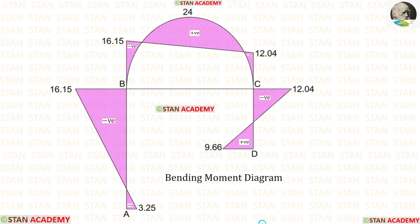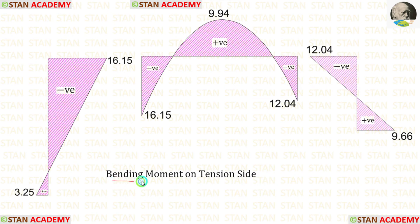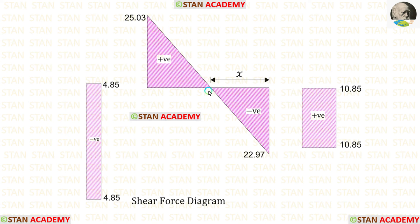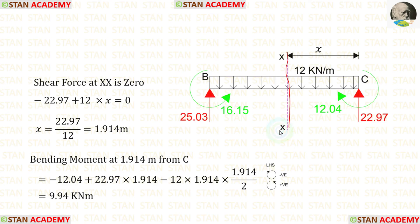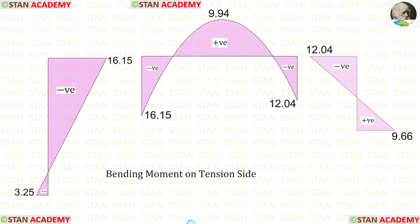Combining both diagrams gives the bending moment diagram. Alternatively, we can draw the bending moment diagram on the tension side. In beam BC, there is a maximum positive bending moment. To find the point where it occurs, we look at the shear force diagram — where the shear force becomes zero, there will be the maximum positive bending moment. Making a section at that point and using the condition that shear force equals zero, we can find x, and then use x to calculate the maximum positive bending moment. This concludes the session. Thank you for watching.